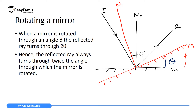Since it's the same mirror that we rotated, we will have a new angle of incidence. The incident ray does not change, but the normal has rotated through an angle equal to the angle of rotation of the mirror, which is theta. The normal has come closer to the incident ray, so the new angle of incidence will be less than the initial angle of incidence, and will be equal to i minus theta.